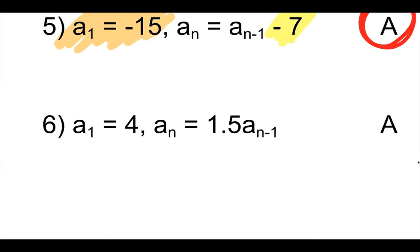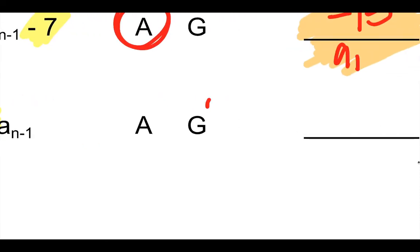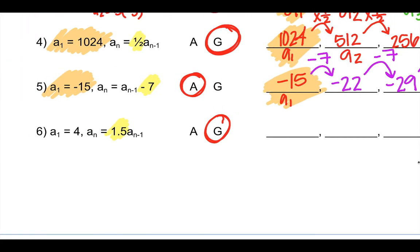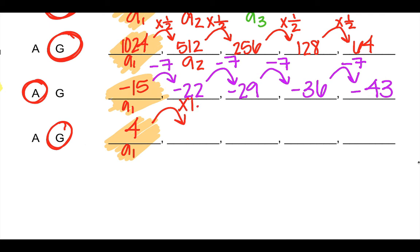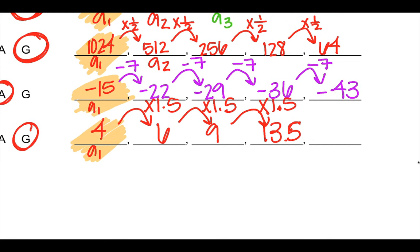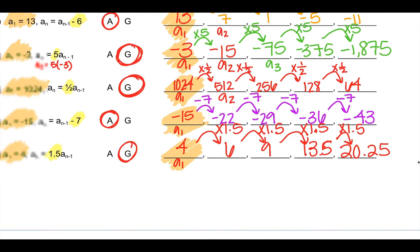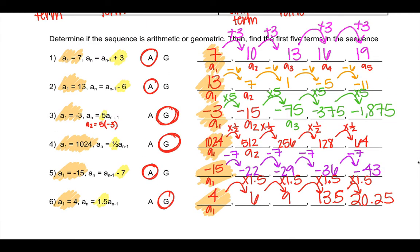Number six: I know it's geometric because I'm multiplying by one-point-five instead of adding or subtracting. The first term is four. To get the next term, I multiply by one-point-five: four times one-point-five is six, six times one-point-five is nine, nine times one-point-five is thirteen-point-five, and one-point-five times thirteen-point-five is twenty-point-two-five. If you're adding or subtracting it's arithmetic; if you're multiplying, it's geometric. The formula tells you how to find any term — you just need that previous term.